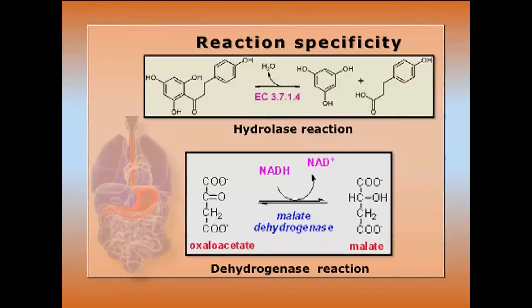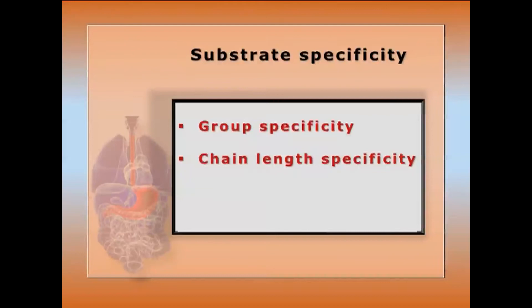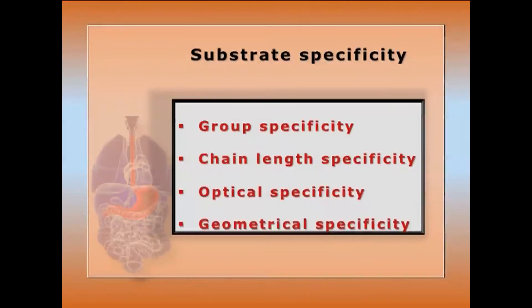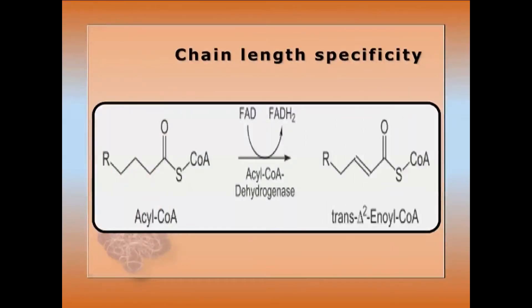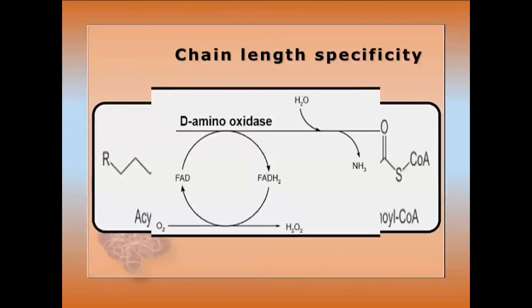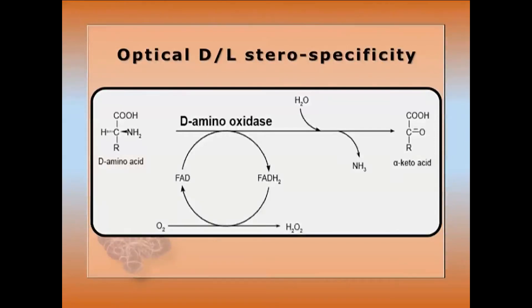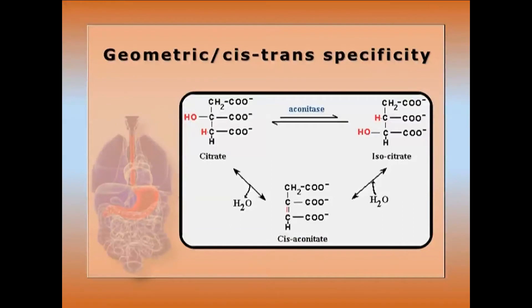Dehydrogenase catalyzes oxidation-reduction reactions with NADH. Substrate specificity includes group specificity — thrombin acts on fibrinogen peptide bonds formed between a glycine amino group and an arginine carboxyl group. Chain length specificity: fatty acyl-CoA dehydrogenase is specific for the long or moderate fatty acyl chain. Optical D/L stereo specificity: D-amino acid oxidase acts on D-amino acids only. Geometric cis-trans specificity: aconitase acts on cis-aconitic acid only, over the double bond carbon chain.